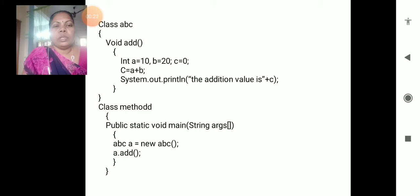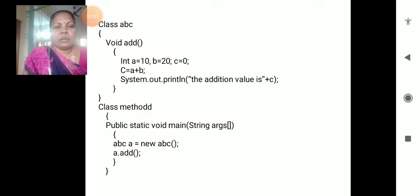So here is an example. First, class - class name, then followed by the method declaration, next variable declaration and statements, and close the class. Then for object creation: